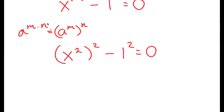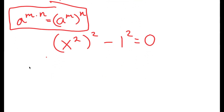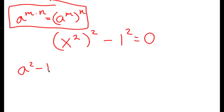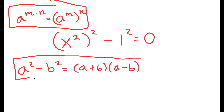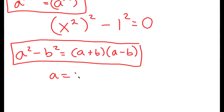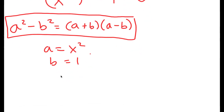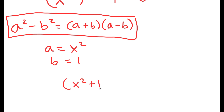Now another property I can use is a squared minus b squared is equal to a plus b times a minus b. So in this case, a is x squared and b is 1. So I get x squared plus 1 times x squared minus 1 is equal to 0.